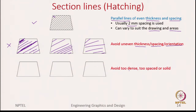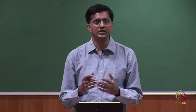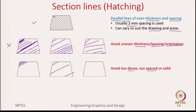We also need to avoid too dense or too spaced lines. Too dense means you cannot have them very close to each other, because if you reproduce or make copies of your drawing, they may not come out as parallel lines but simply as a solid black color. Having too big a gap is also to be avoided, because then you may confuse the section lines with outlines of the drawing. And filling with one uniform solid color is also to be avoided. These are all poor practices.